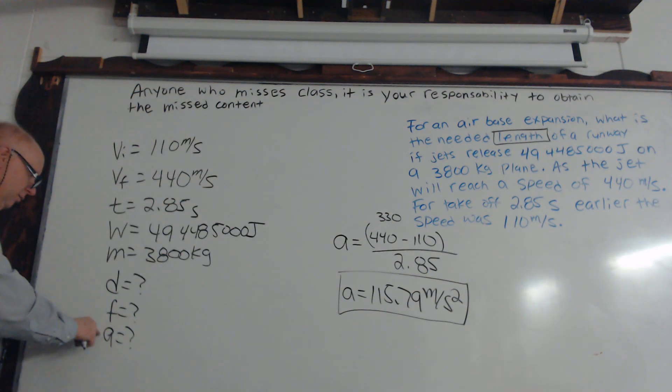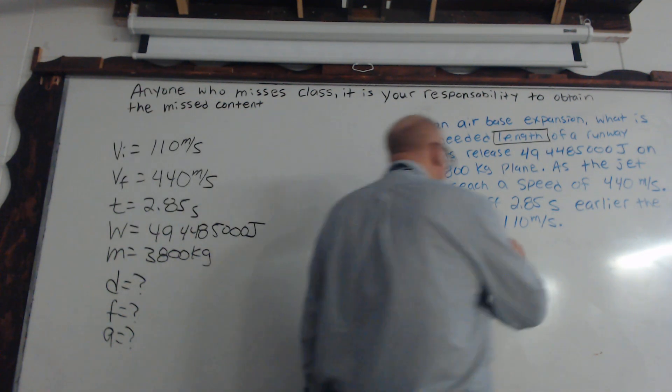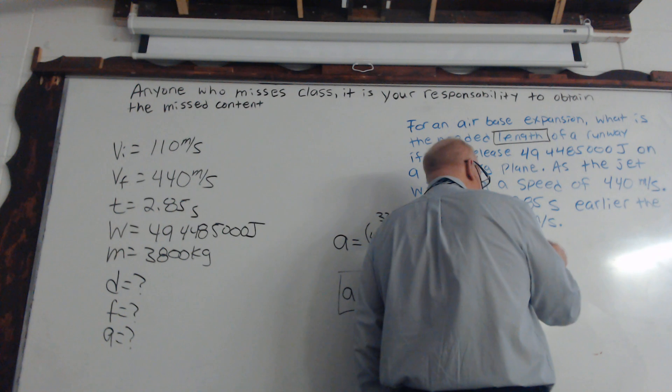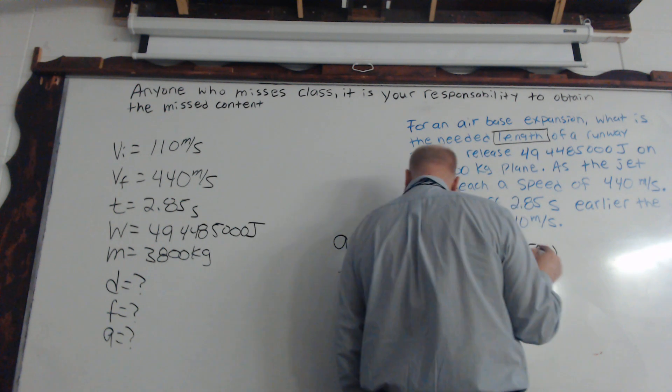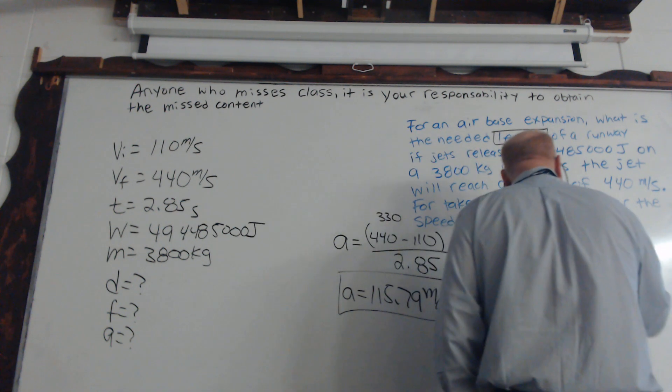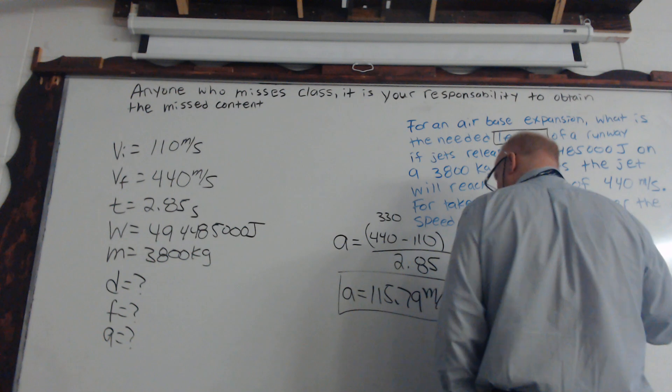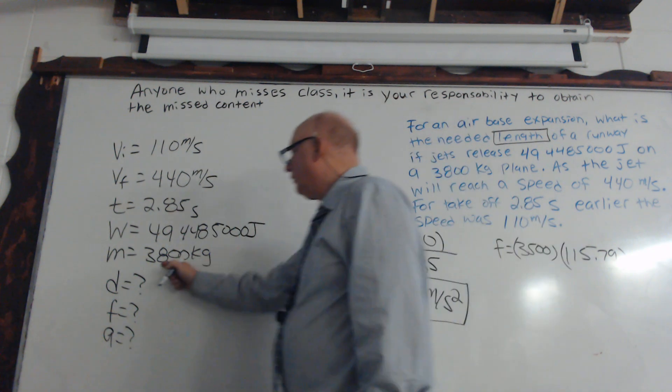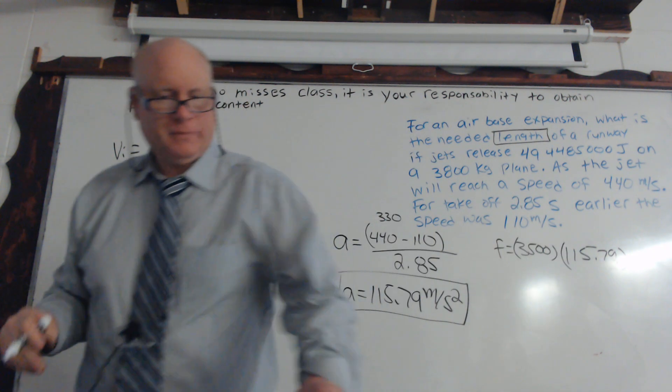So we can just move right up the ladder. Now let's go ahead and find our force, which is mass times acceleration. So 3,500 times the number we just calculated. 3,800... oh, I said 115.79.